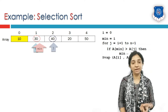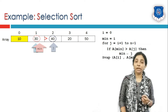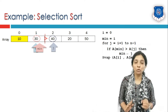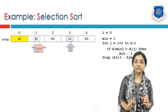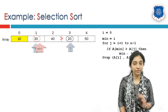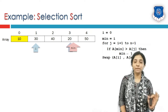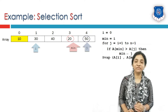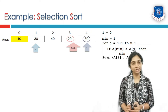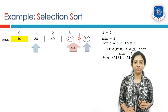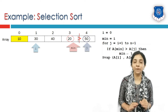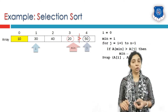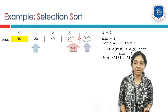We compare element at min with element at j. Is 30 greater than 40? No, condition is false, so min is not changed, only j is incremented. Is min element greater than j element? Is 30 greater than 20? Condition is true, so min changes its location to the jth location. j is incremented. We compare element at min with element at j. Is 20 greater than 50? Condition is false, so min is not changed. j has already reached the last element at n minus 1.